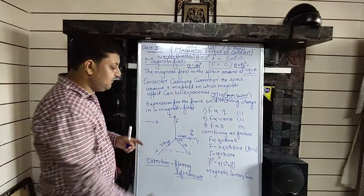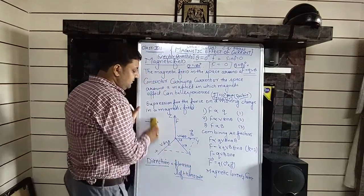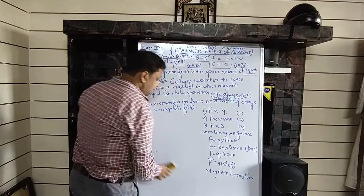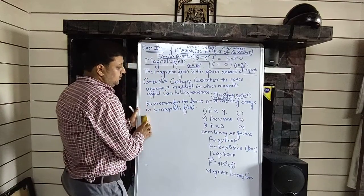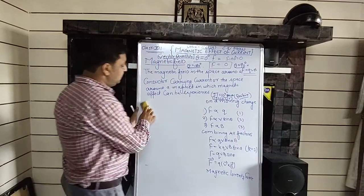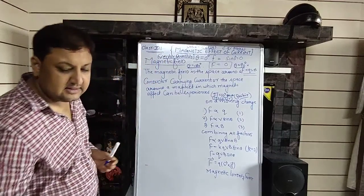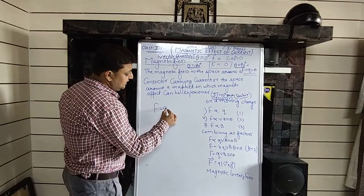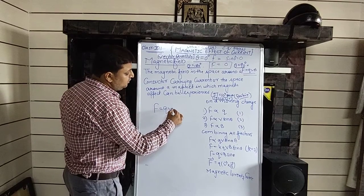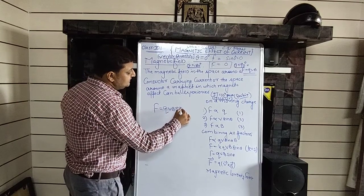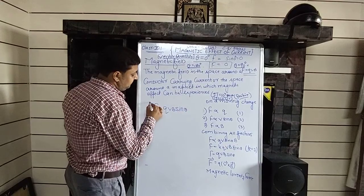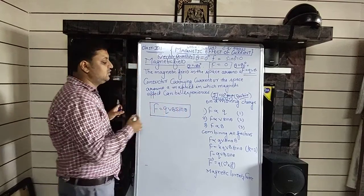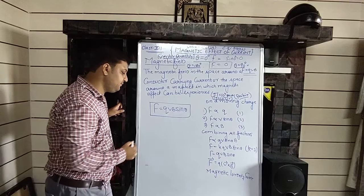Now from this same formula we can also explain or define the magnetic field. The force formula we derived is F = qvB sinθ.